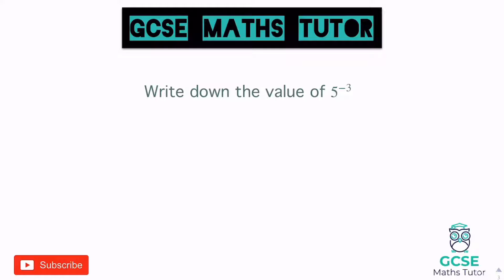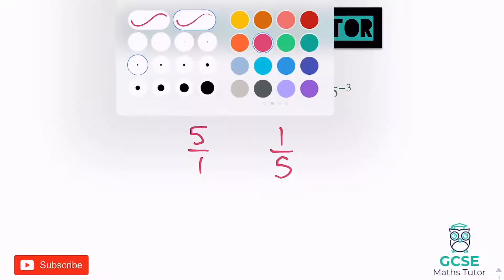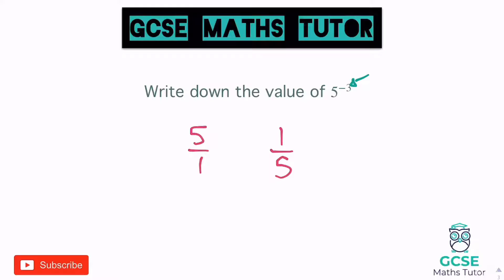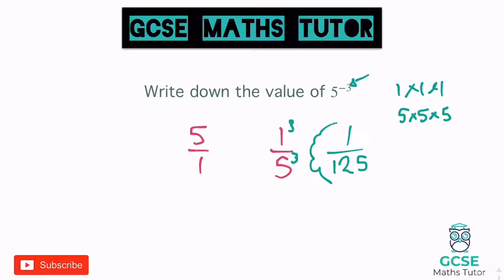Write down the value of five to the power of negative three. We'll imagine five as being five over one, flip it over, which makes it one over five. This time we have a three in the power, so we're going to do both these numbers cubed. One to the power of three is one times one times one, which is one. Five to the power of three is five times five times five — five times five is 25, times five again is 125. So our final answer is one over 125.